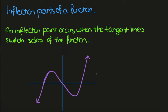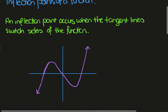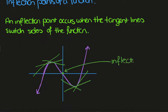In today's video we want to look at inflection points of a function. An inflection point occurs when the tangent lines switch side of the function. Consider this cubic function here — the tangent lines lie above the curve on one side, but over here the tangent lines lie below. So an inflection point occurs somewhere near the origin.